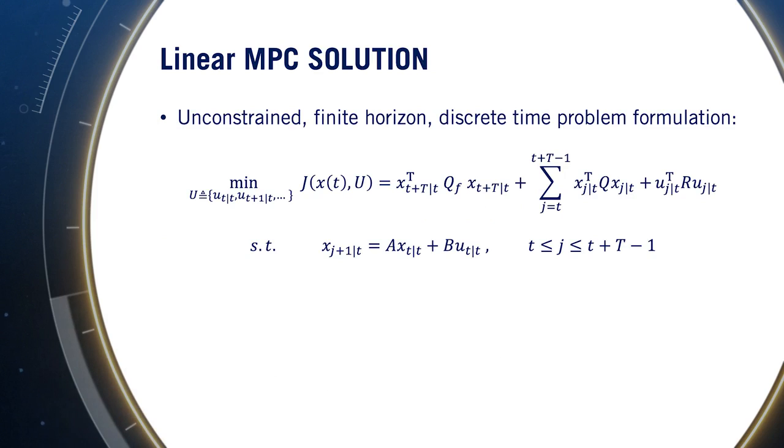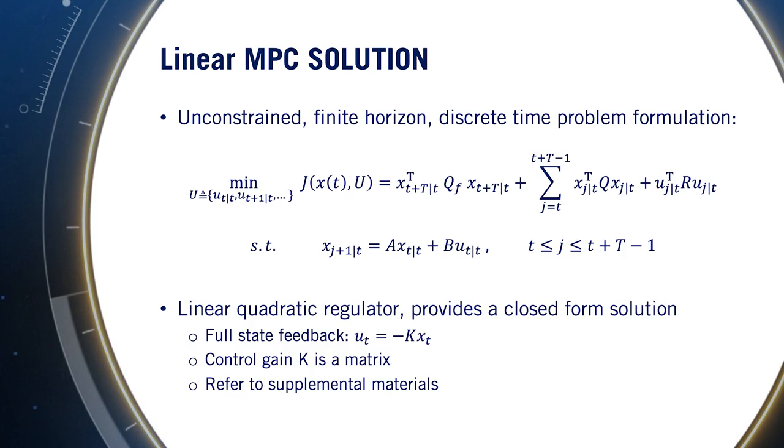This is a famous optimization formulation and has a closed form solution, the linear quadratic regulator or LQR. The closed form solution uses full state feedback, meaning that all states are used in the control response. The LQR solution defines a control gain matrix K, which can be computed from the A and B matrices of the state space model and the Q and R matrices of the cost function. We've included links in the supplemental materials to this fascinating result of state space control theory.